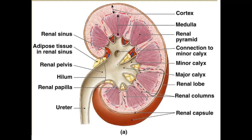The upper covering layer of the kidney is called the renal capsule. There are two main layers of the kidney — we call the outer layer the cortex, and the lower layer of the kidney is called the medulla.